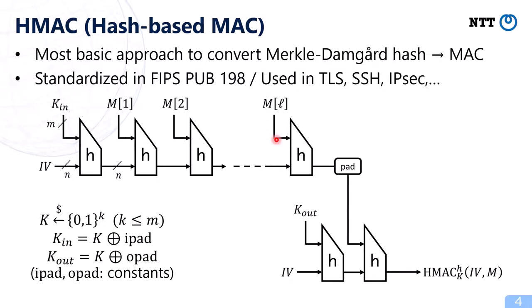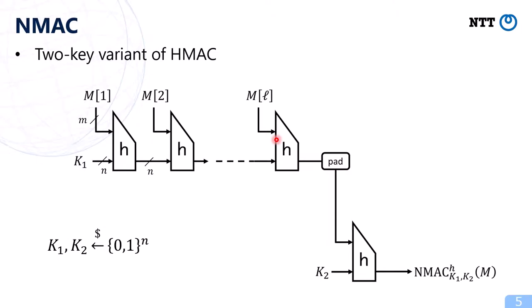This is HMAC. NMAC looks like this — it is a two-key variant of HMAC. In this construction, two independent keys K1 and K2 are chosen uniformly at random and used as shown. HMAC and NMAC were proposed by Bellare et al.